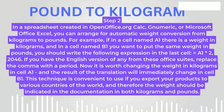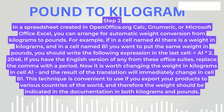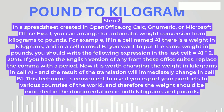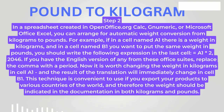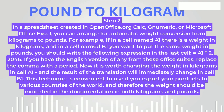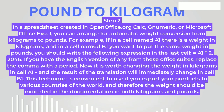Step 2: In a spreadsheet created in OpenOffice.org Calc, Gnumeric, or Microsoft Office Excel, you can arrange for automatic weight conversion from kilograms to pounds. For example, if in a cell named A1 there is a weight in kilograms, and in a cell named B1 you want to put the same weight in pounds, you should write the following expression in the last cell: =A1*2.2046.